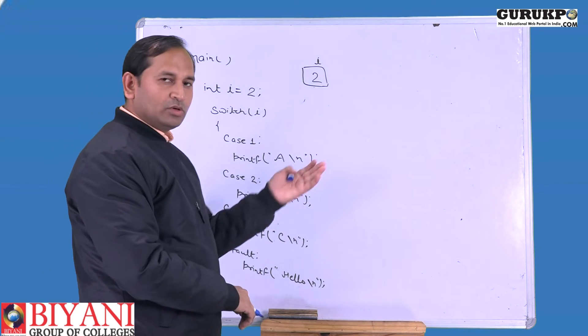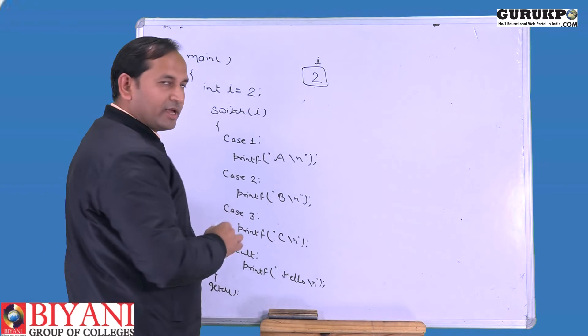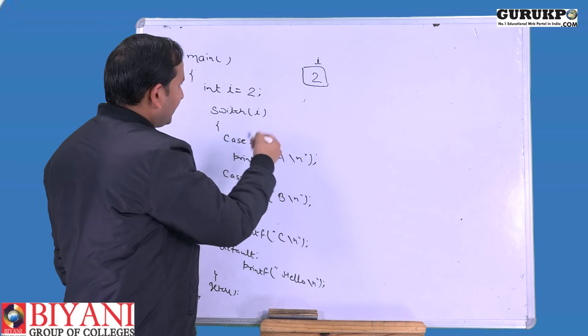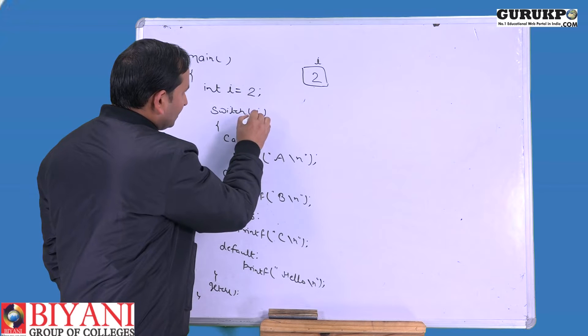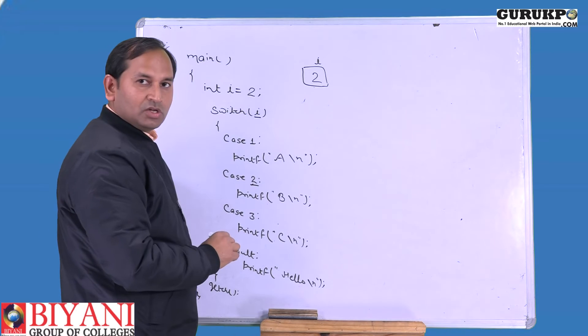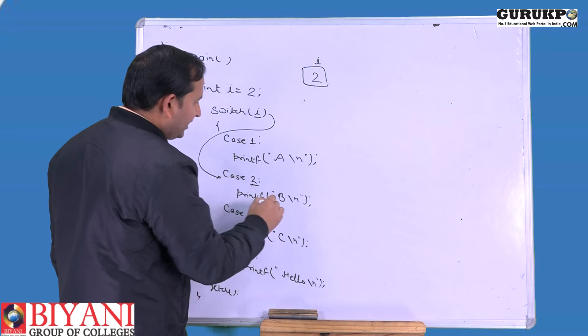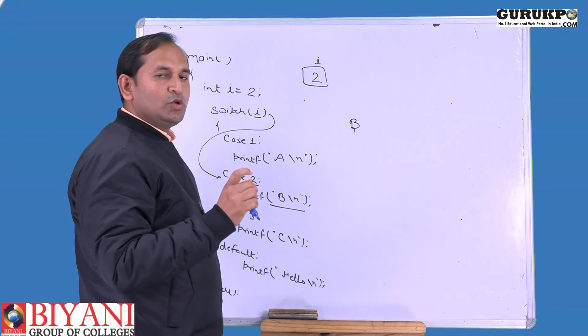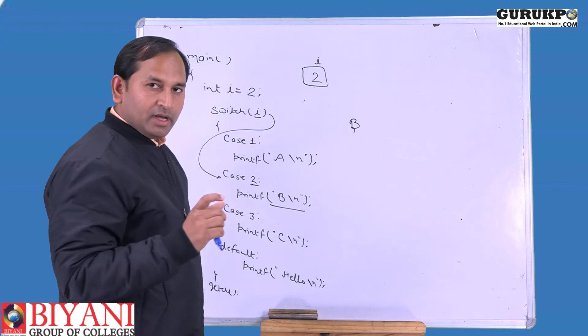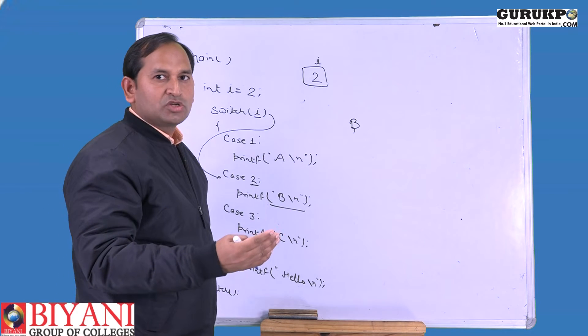Switch i, so it will pass to case 1. It is not equivalent to case 1, so now it will compare to case 2. i is 2, which equals this one, so control directly goes here and it prints V. The switch value always compares to the case value, and if there is a break statement, then control automatically goes outside the block.